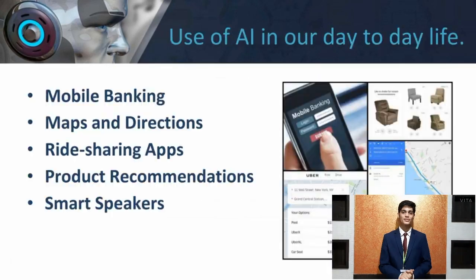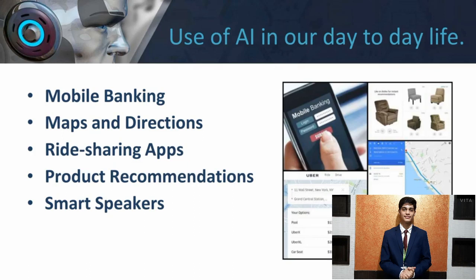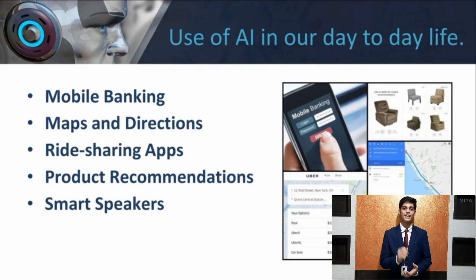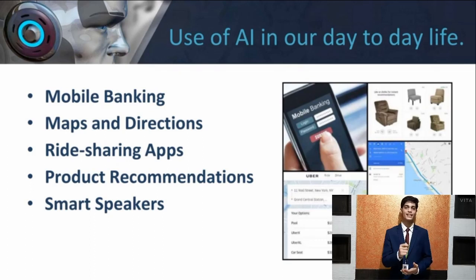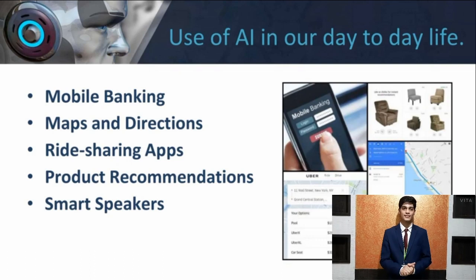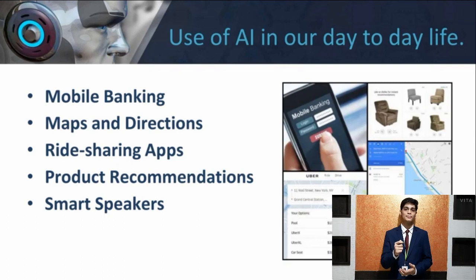Our next topic is the use of AI in our day-to-day life. First point: mobile banking. AI not only automates credit and debit card management systems but also makes it safer. It helps customers get rid of long authentication processes in case they lose their cards. The AI system saves time and effort of customers and helps to improve mobile banking services.